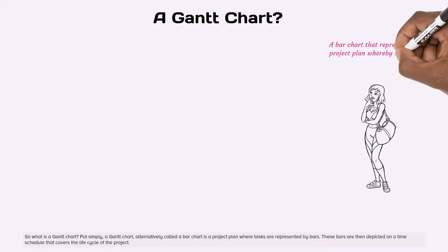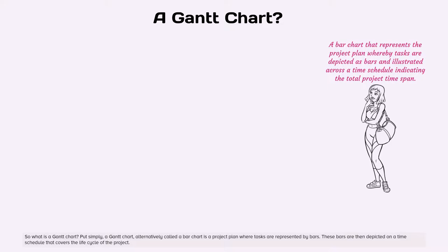So what is a Gantt chart? Put simply, a Gantt chart, alternatively called a bar chart, is a project plan where tasks are represented by bars. These bars are then depicted on a time schedule that covers the life cycle of the project.